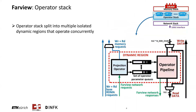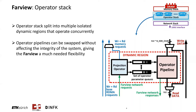To deploy operators that can process the data, the operator stack is divided into multiple isolated dynamic regions that operate concurrently. Clients access the disaggregated memory by first opening a connection to one of these dynamic regions, and each dynamic region can then serve query requests and can be loaded with one of the available operator pipelines that can execute a set of different queries. Importantly, the operator pipelines in these regions can be swapped on-the-fly during runtime without affecting the integrity or operation of other dynamic regions. This is what gives Farview a much-needed flexibility in comparison to traditional in-memory database accelerators.